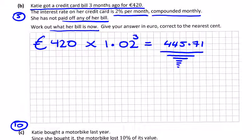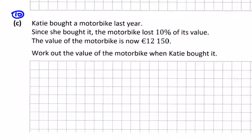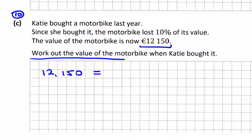Katie bought a motorbike. Don't buy a motorbike either - they're extremely dangerous. Since she bought it, it lost 10% of its value. The value of the motorbike is now 12,150. How much was it when she bought it? Some more calculator use. What's 12,150 equal to? 90% of its value. You could write that down straight away.